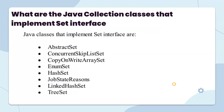What are the Java collection classes that implement Set? These include AbstractSet, ConcurrentSkipListSet, HashSet, and others.